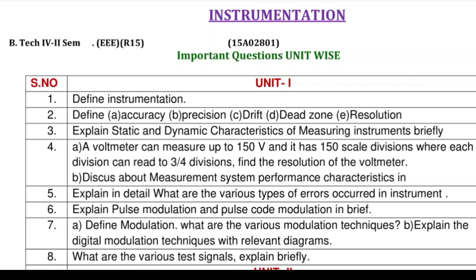Coming to Unit 1: characteristics of signals. The first question is define instrumentation or describe instrumentation — that is a basic question. Next, what are the various static characteristics? Define accuracy, precision, drift, dead zone, and resolution — all these come under static characteristics.